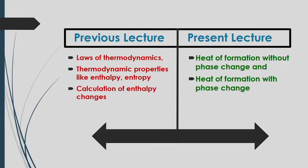In the previous lecture, we described the laws of thermodynamics and thermodynamic properties like enthalpy and entropy, and how to calculate enthalpy change based on phase change as well as without phase change, based on material characteristics like specific heat at a particular temperature, pressure, and constant volume. We also worked through examples on how to calculate and assess enthalpy changes.